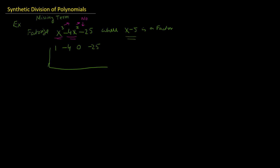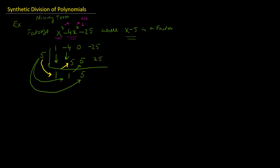We bring the first number straight down. Then we multiply 5 by 1 and place it there — so 5 into 1 is 5. We add these two numbers — we don't subtract — giving 1. Then multiply 5 by 1 and put 5 there. Add 5 and 0 to get 5. Then multiply 5 by 5 and put 25 there. Add: minus 25 plus 25 is 0. This 0 confirms we have done the correct procedure, because if x minus 5 is a factor, the remainder should be 0.